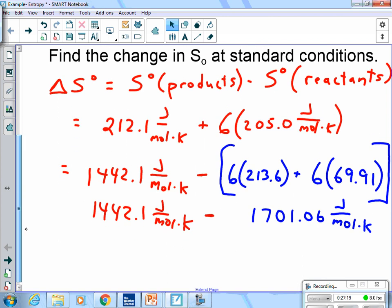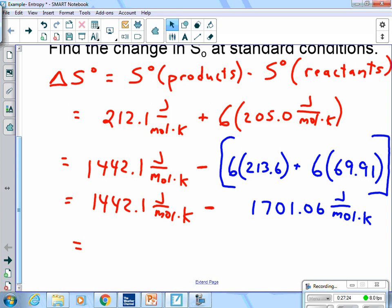So as I go down just a little bit more, what I'm going to do is I am going to take 1442.1 and I'm going to subtract 1701.06. So I get a value of negative 258.96 joules over mole times kelvin. So are we gaining or losing entropy? We're losing entropy from reactants to products. Correct?